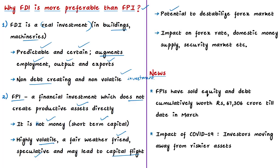FPI is highly volatile — a fair-weather friend — speculative, involves exchange risks, and may lead to capital flight and currency crises affecting real economic variables. FPI has the potential to destabilize the foreign exchange market; fluctuations in FPI mobility affect foreign exchange rates, domestic money supply, the value of the rupee, and security markets. A change in the return potential of the destination market or risk capital at source can result in a quick reversal of FPIs. This is why long-term and less fluctuating FDI is preferred over speculative, volatile FPI.